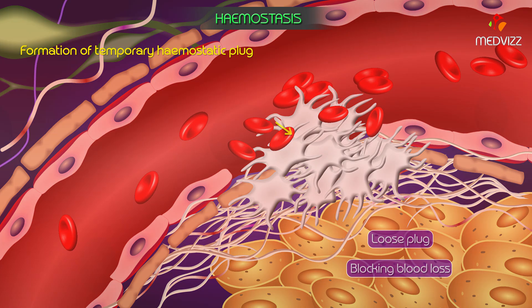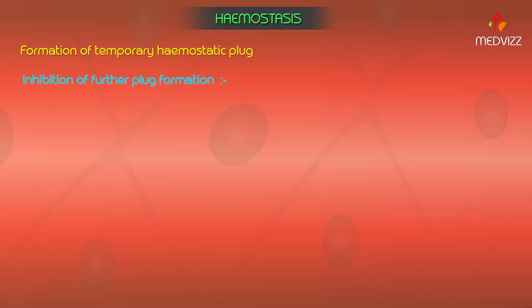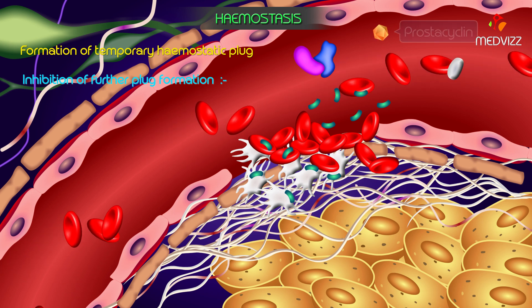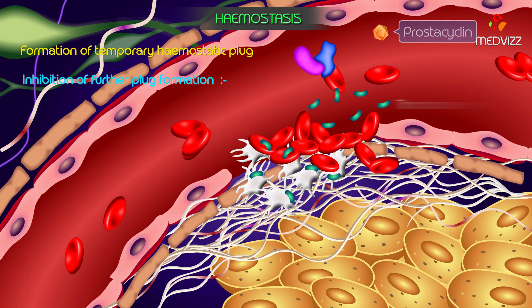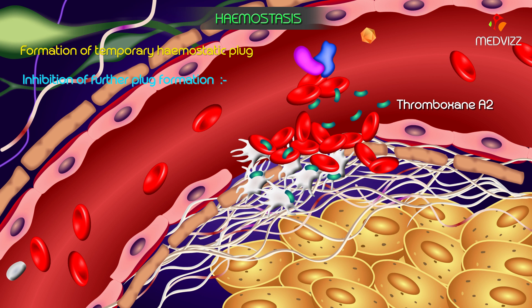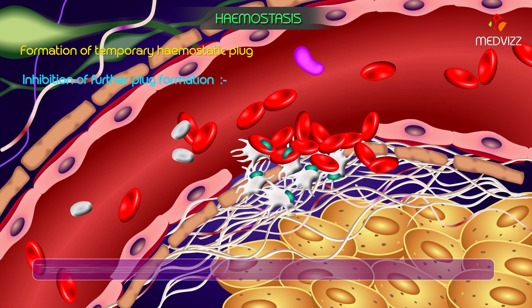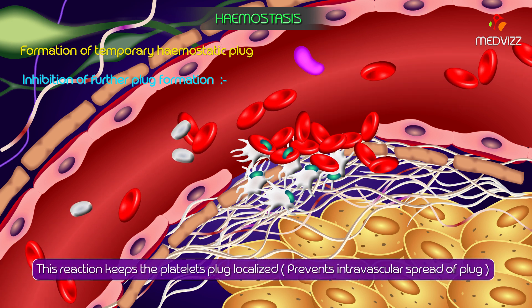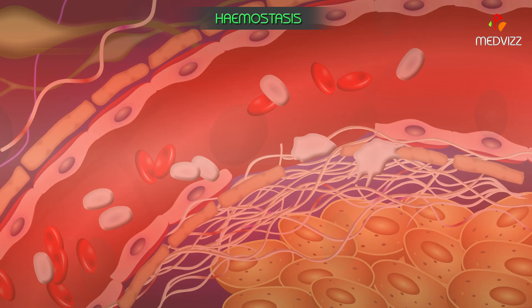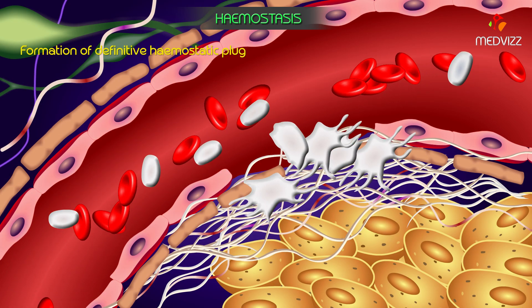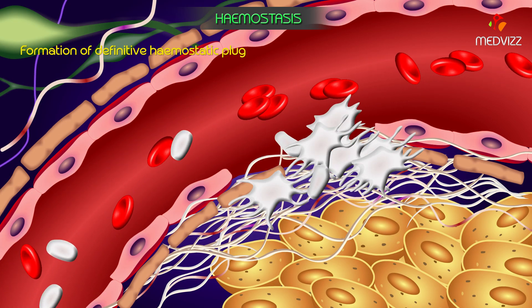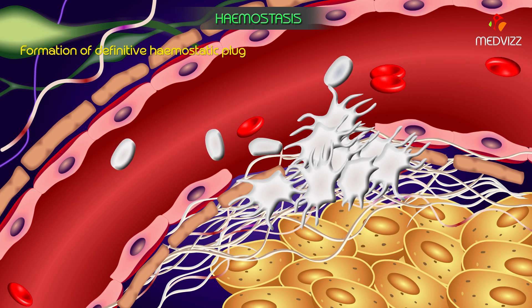Inhibition of further plug formation: prostacyclin, formed from the membrane phospholipids, inhibits thromboxane formation and thus curtails the process of further plug formation. This reaction keeps the platelet plug localized, that is, it prevents intravascular spread of plug formation.